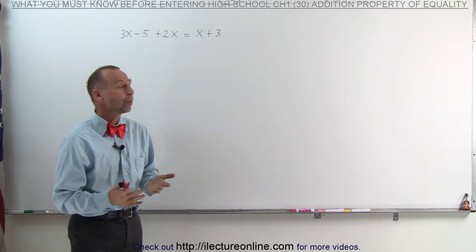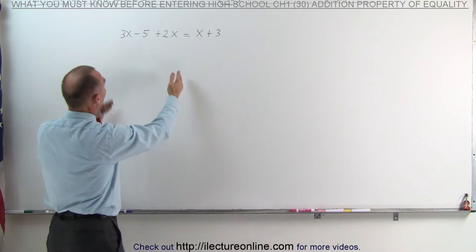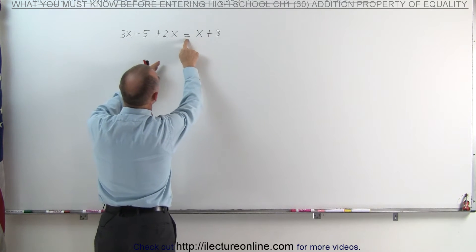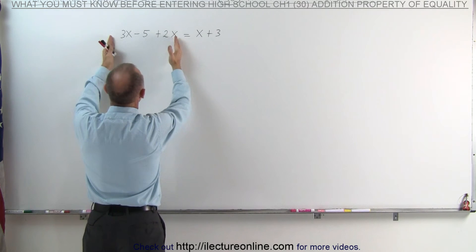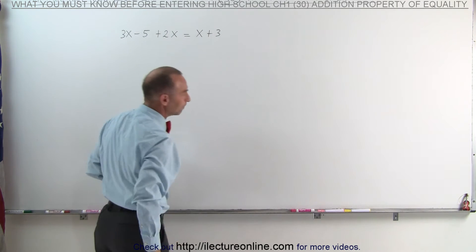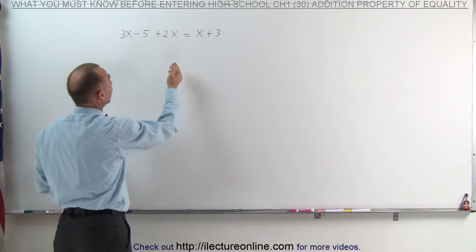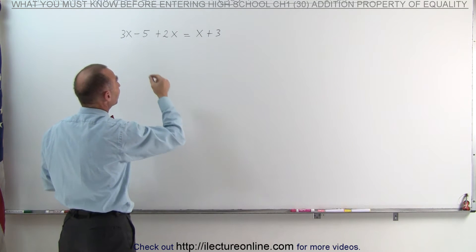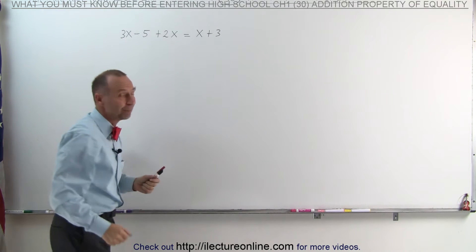When you have an equation — and here's an example of an equation — there's a left side, there's an equal sign, and there's the right side, which means that the left side equals the right side. Now how can you get the left side to equal the right side? We need to find the correct value for X such that the left side equals the right side.